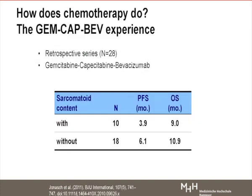Given this aggressive tumor with rapid growth, one question is whether chemotherapy could be a target. There is a retrospective series of 28 cases using gemcitabine, capecitabine, and bevacizumab as a triple combination. Looking into subgroups with or without sarcomatoid tissue, there is a worse outcome in those with sarcomatoid tissue, but overall the group does not do well — although there is still some activity.